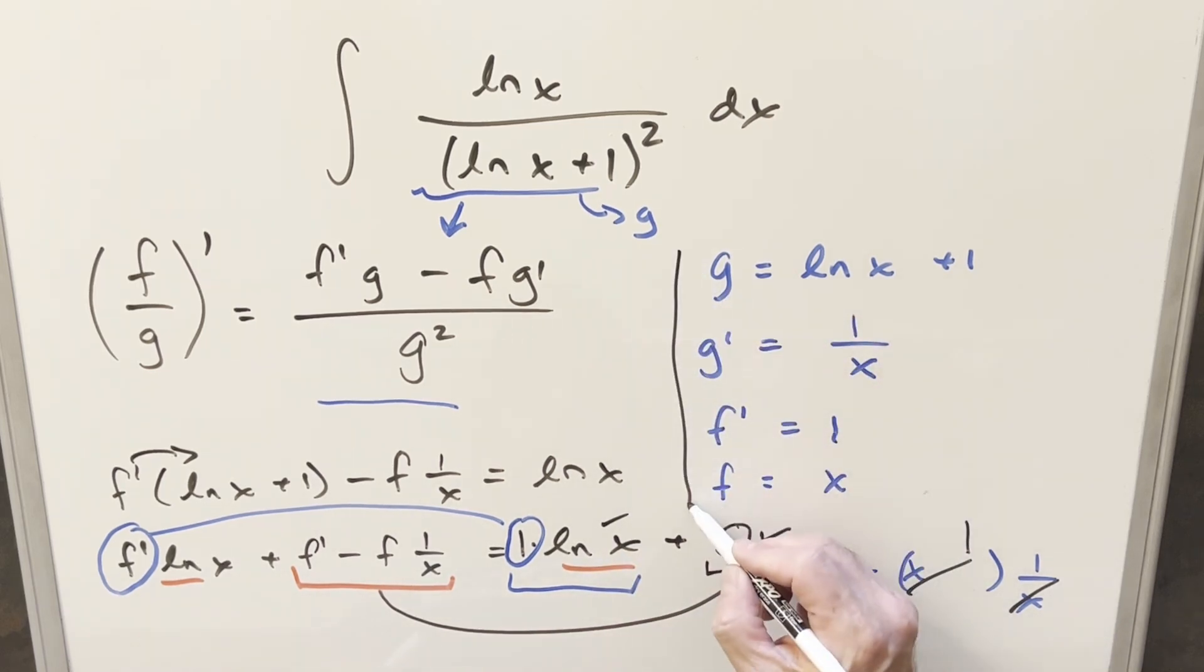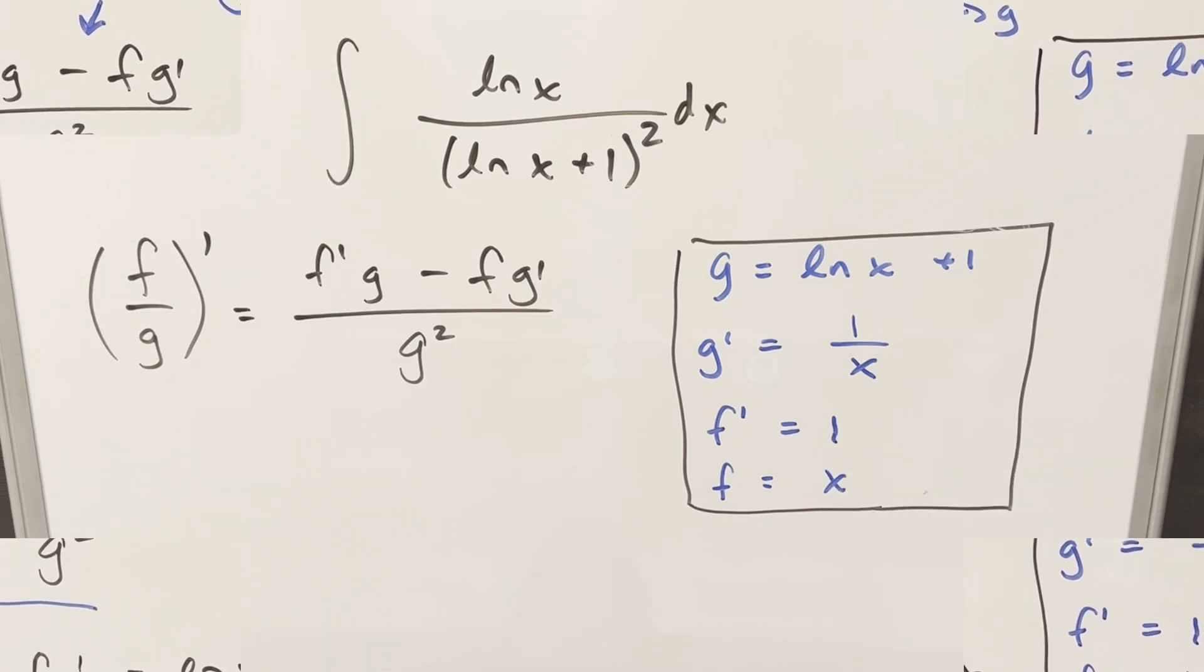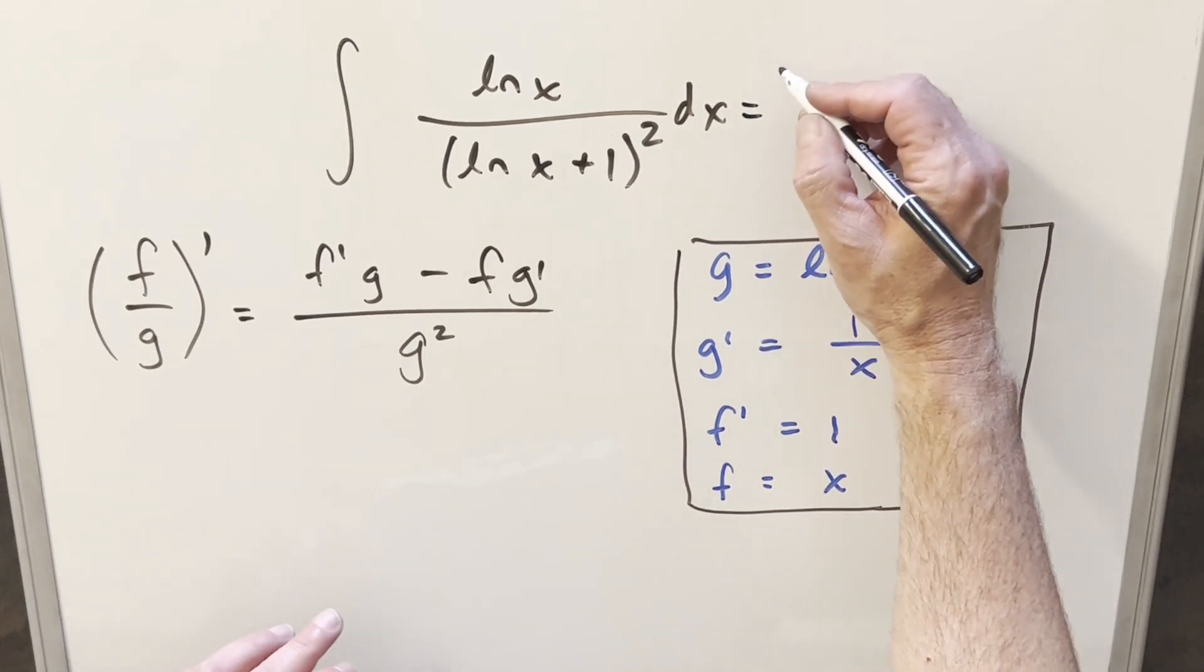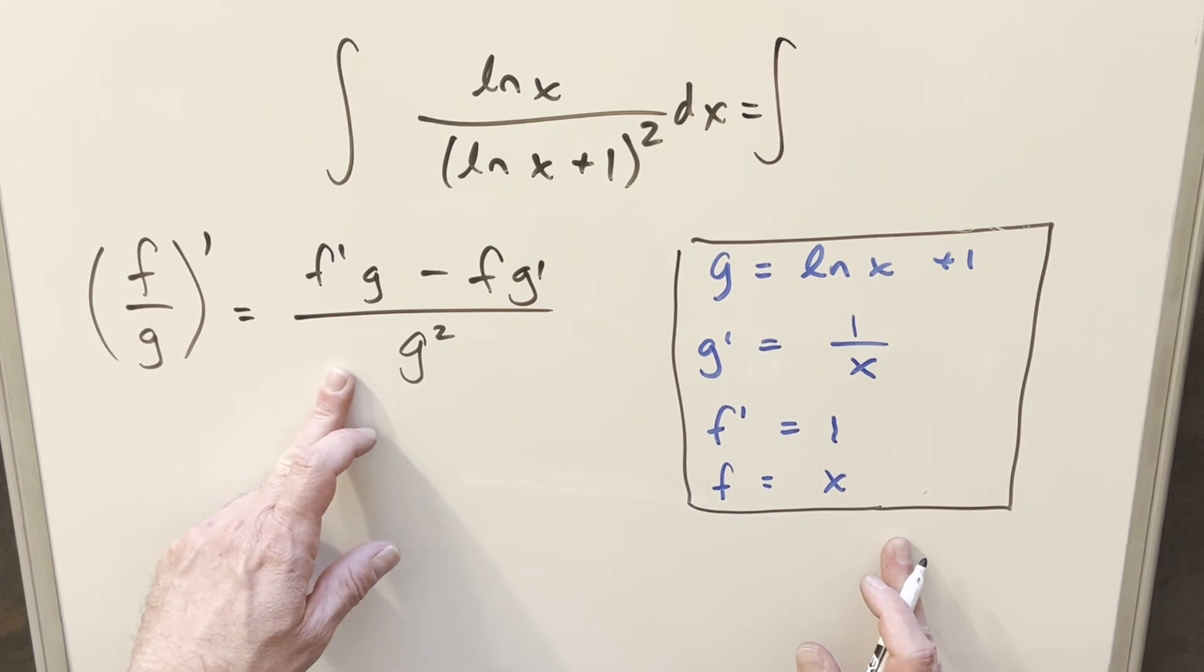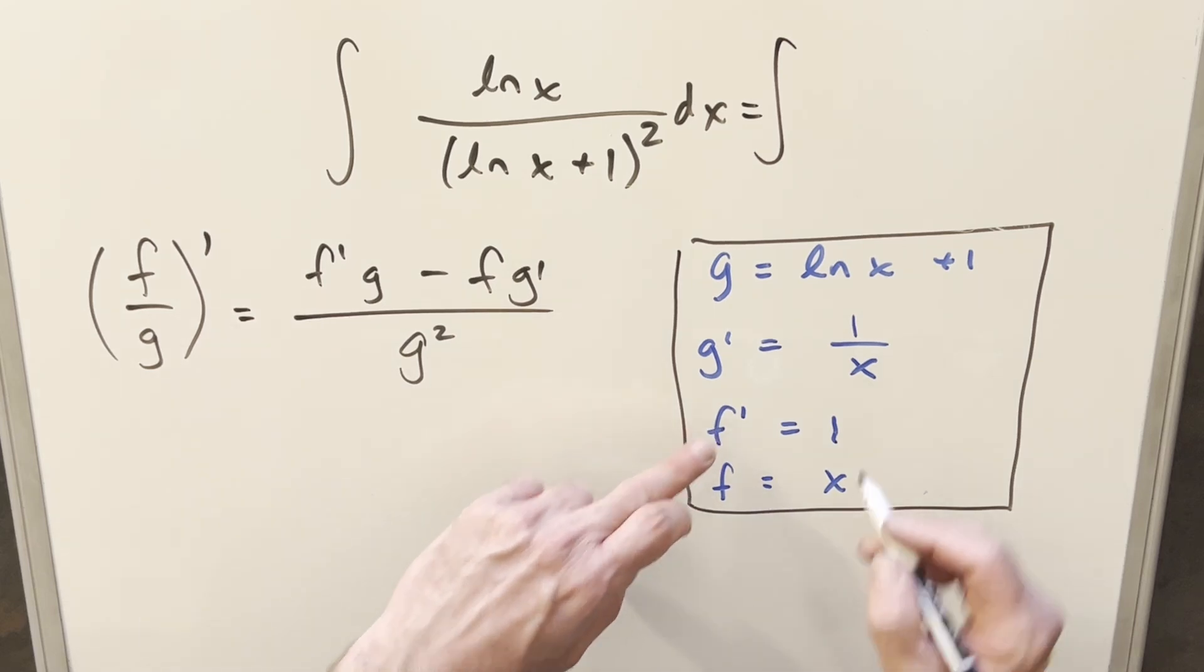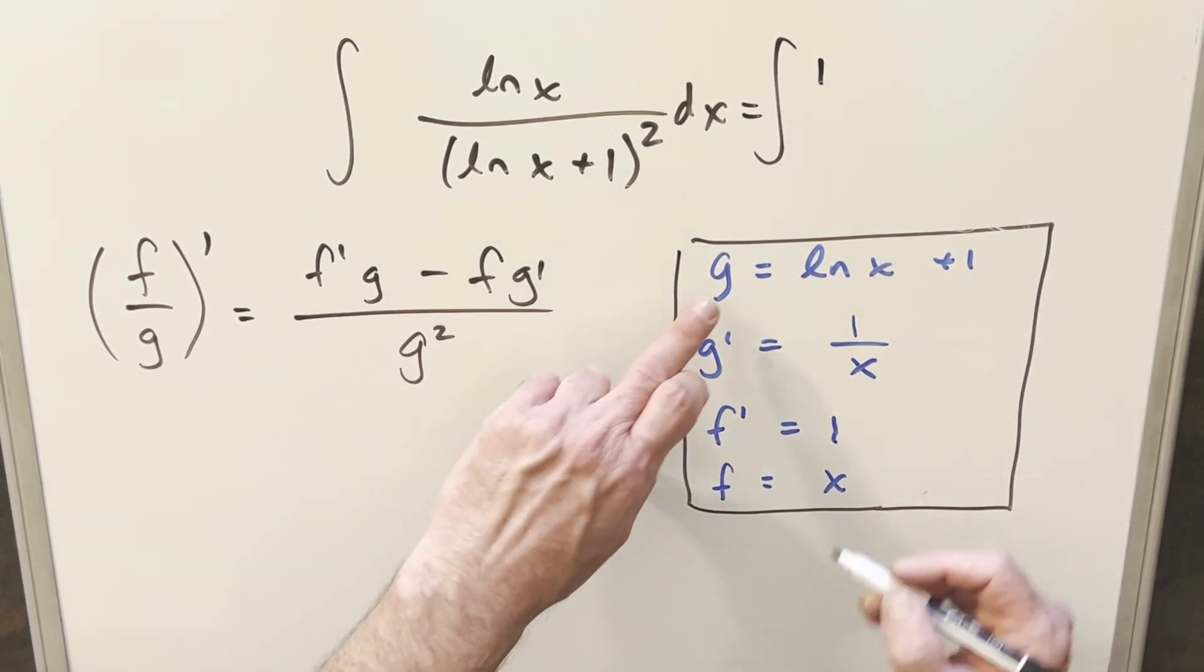And so we have everything we need right here. So now to make this all really clear, let's just rewrite our integral using this, what we have here, just putting it in exactly this form so we can see it clearly.